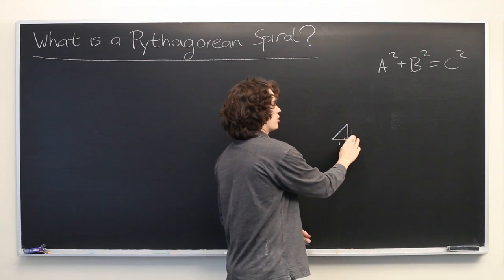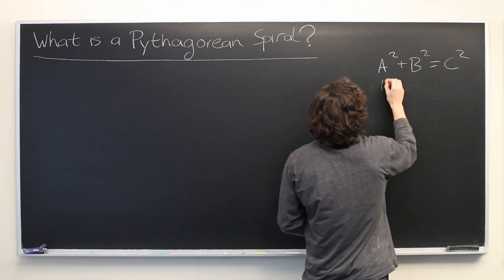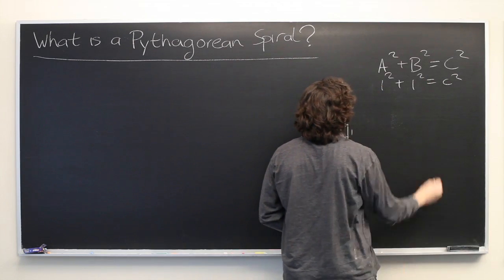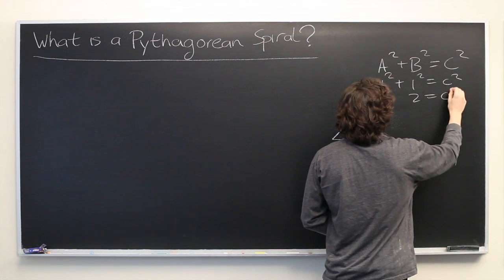We plug in the information that we already know. One squared plus one squared equals C squared. So, two equals C squared.